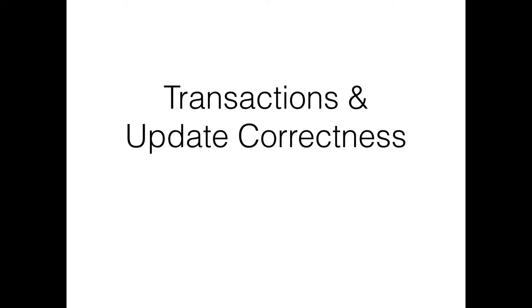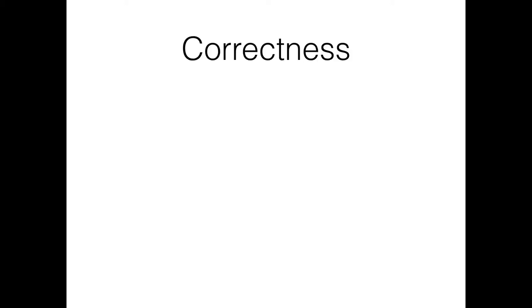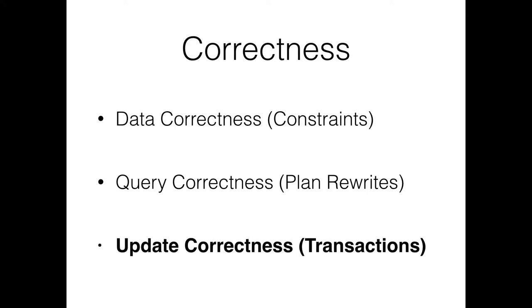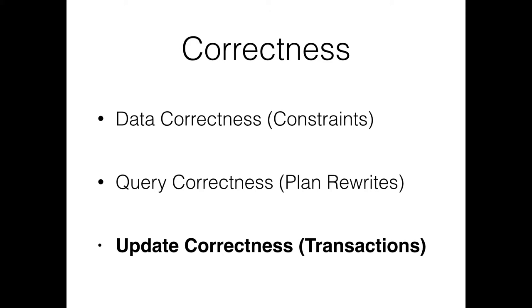Before getting into the idea of changing data, let's first think about what it means for a change to be correct — what does it mean for data in general to be correct? We've looked at correct data in terms of constraints, and query correctness through the idea that two plans are equivalent if you can rewrite one into another. What we're going to focus on today is the correctness of changes to your data, looking at it from the opposite perspective: what could possibly go wrong?